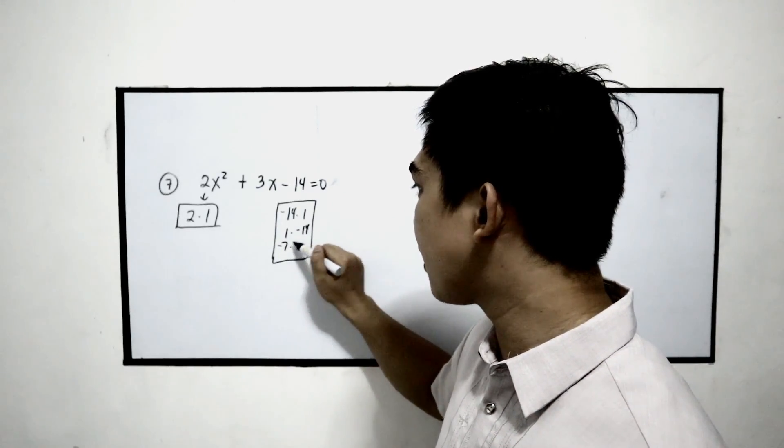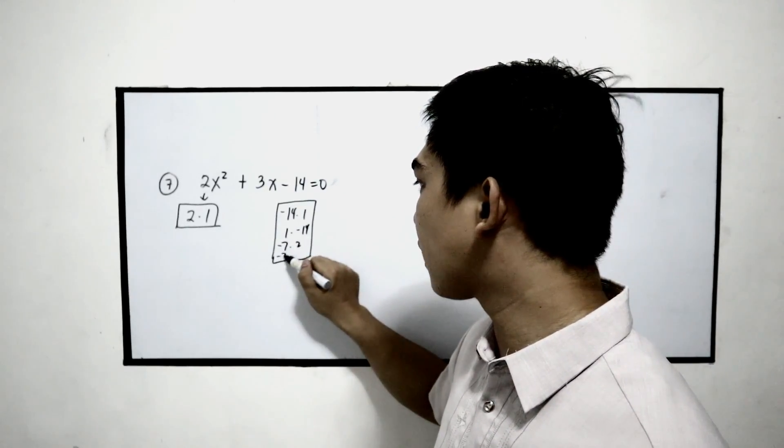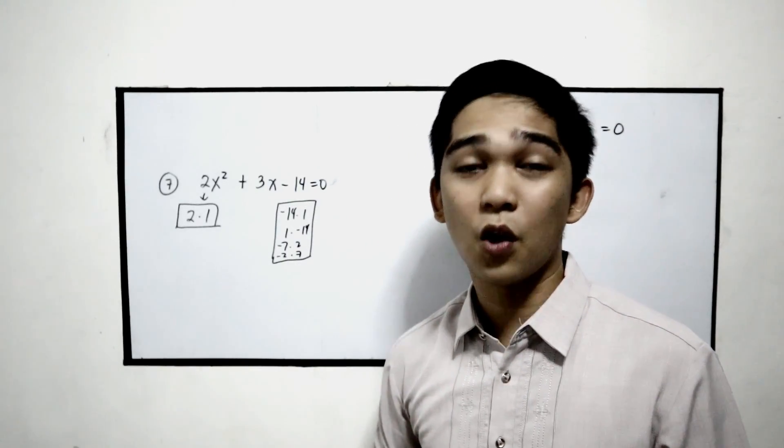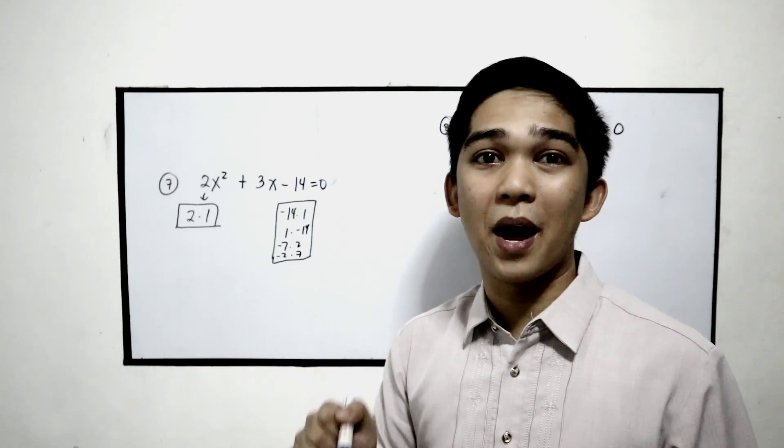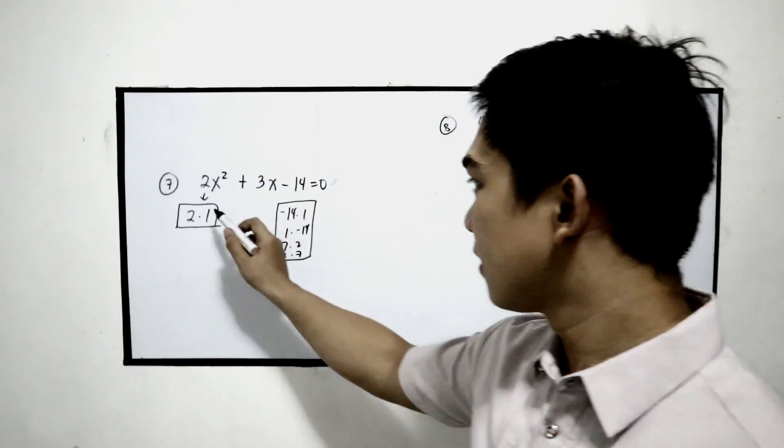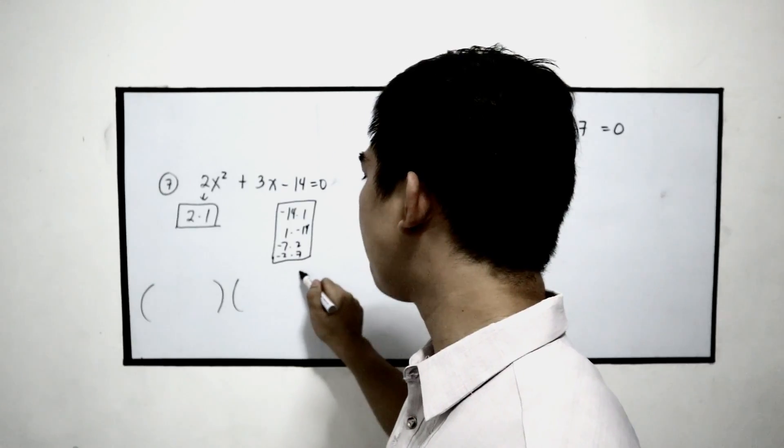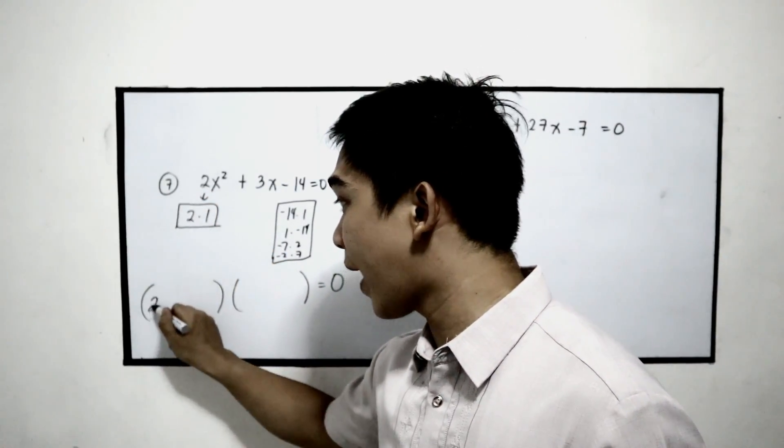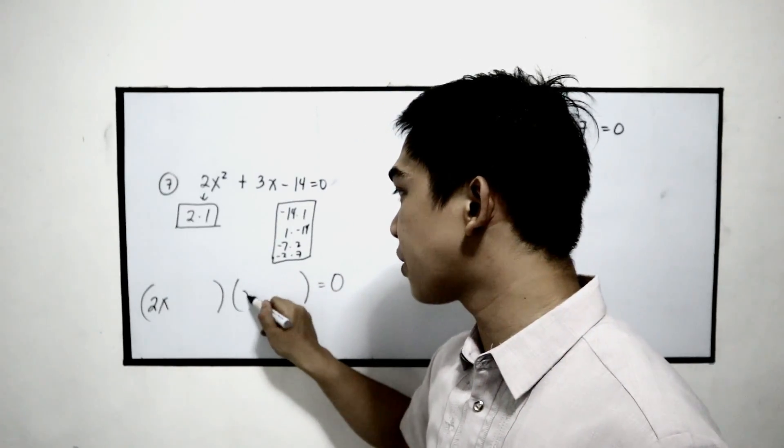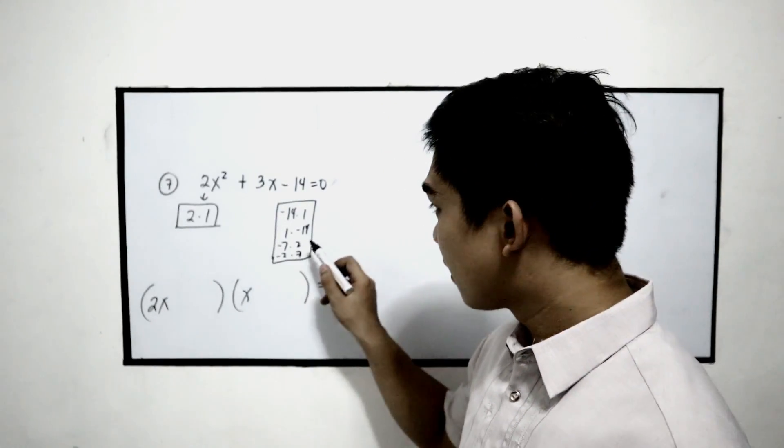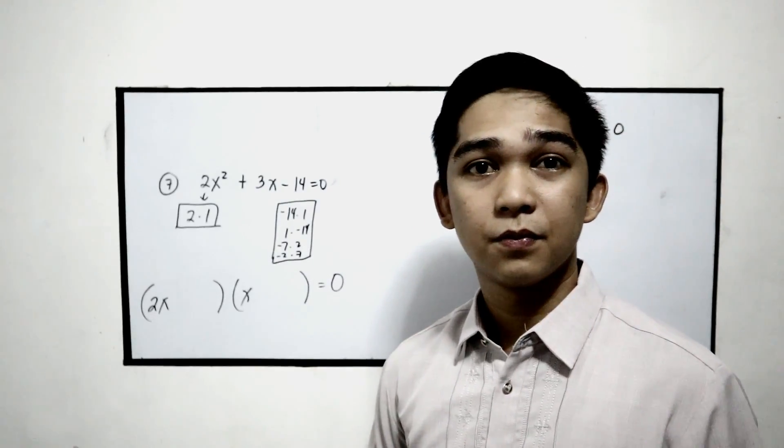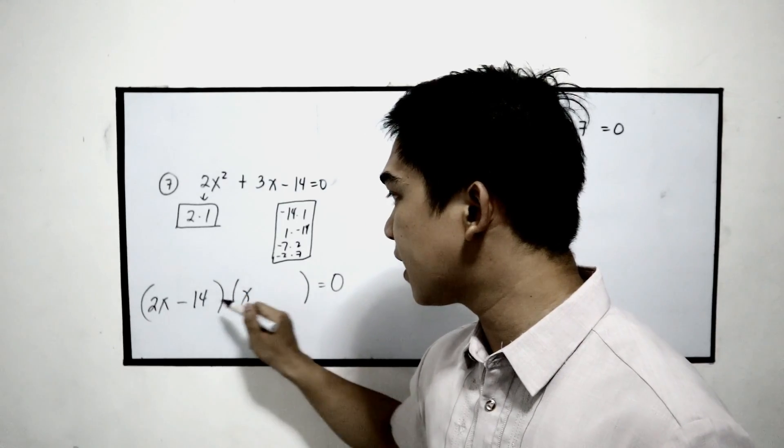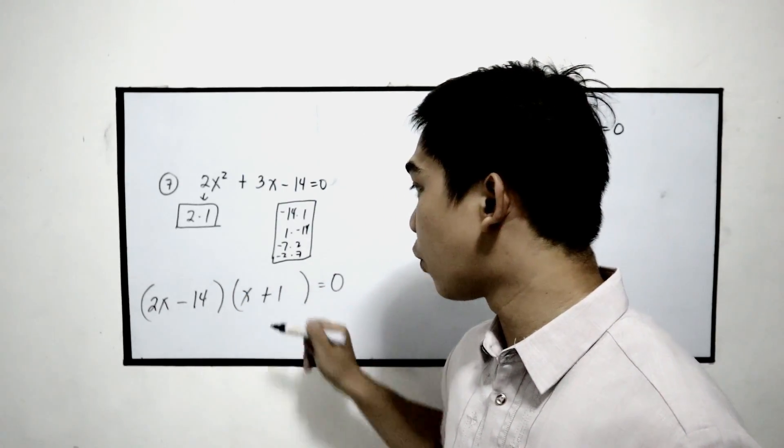Also negative 7 times 2 or negative 2 times 7. Then we're going to use the trial and error method. So in this case, we only have one factor for the first term, that is 2x times x. Let's try negative 14 times positive 1.